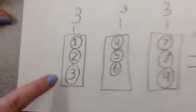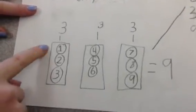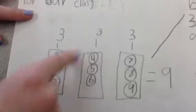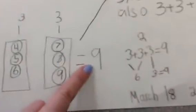Here is our second strategy. Each tube has 3 balls inside. So, 3 plus 3 plus 3 equals 9.